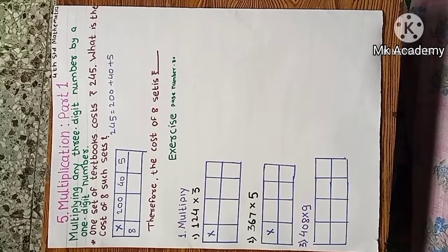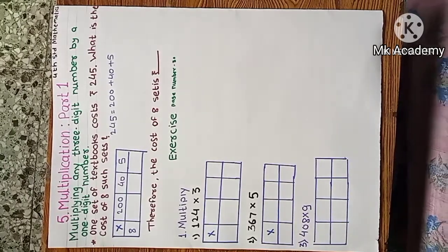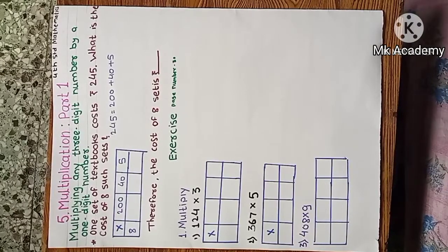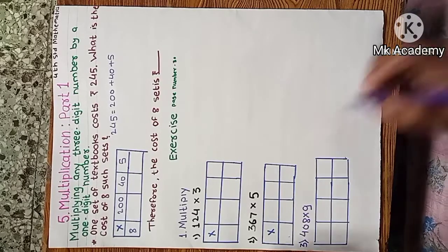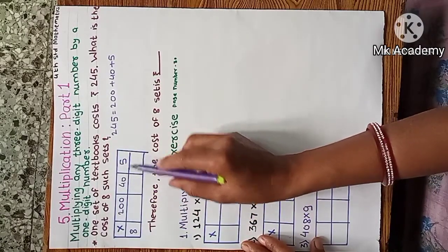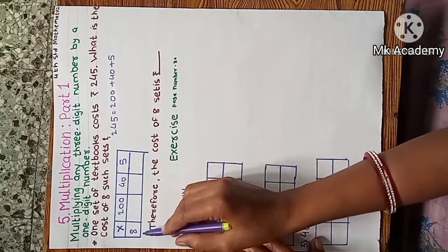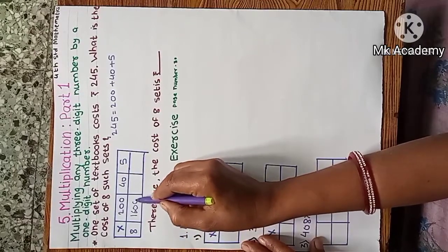First example: one set of textbooks costs rupees 245. What is the cost of 8 such sets? We know that 245 is equal to 200 plus 40 plus 5. We can solve this example by using the lattice method. Here 200, 40, and 5 are multiplied by 8.